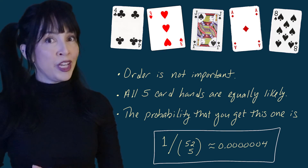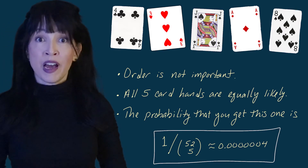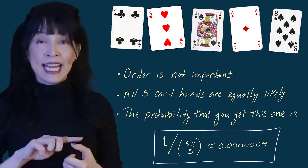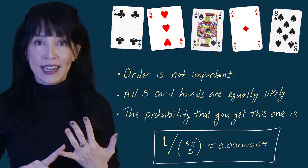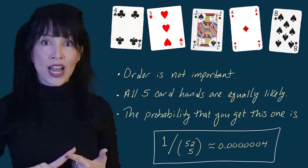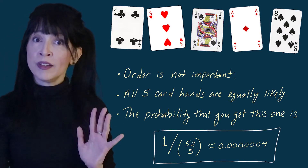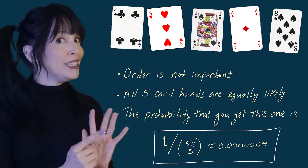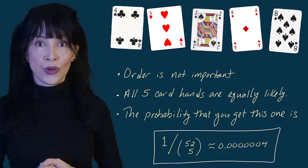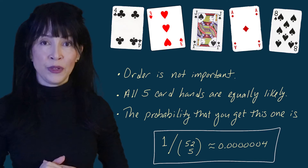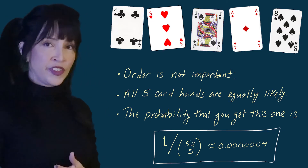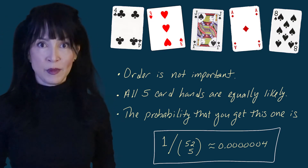If you're playing poker, everyone wants the royal flush — the ten, jack, queen, king, and ace all in the same suit. That hand could be all hearts, all spades, all diamonds, or all clubs, so there are four different ways to get a royal flush. The probability is four divided by 52 choose five.